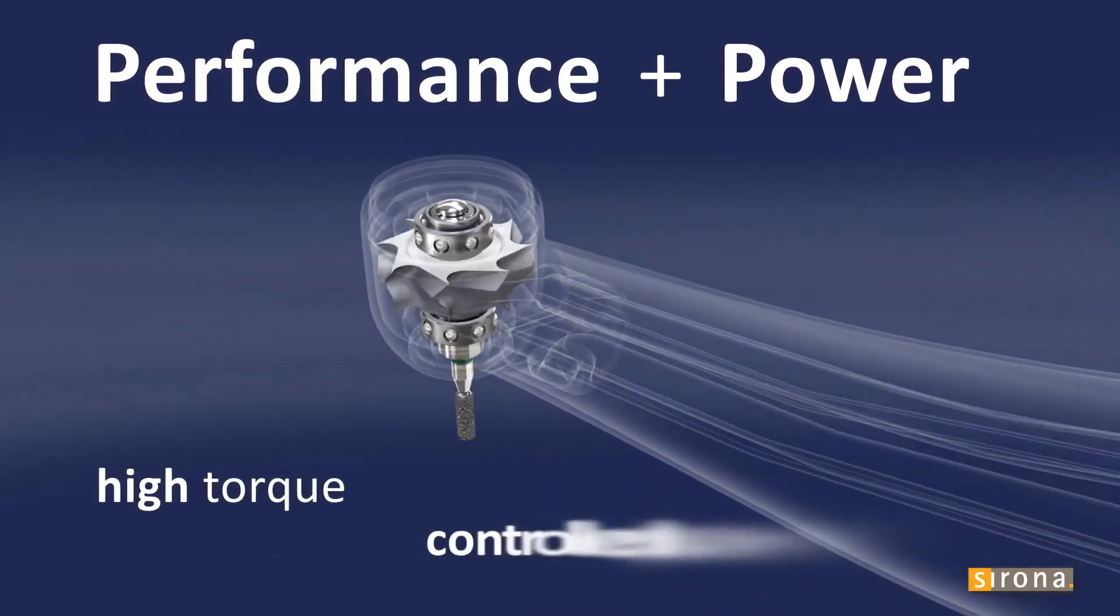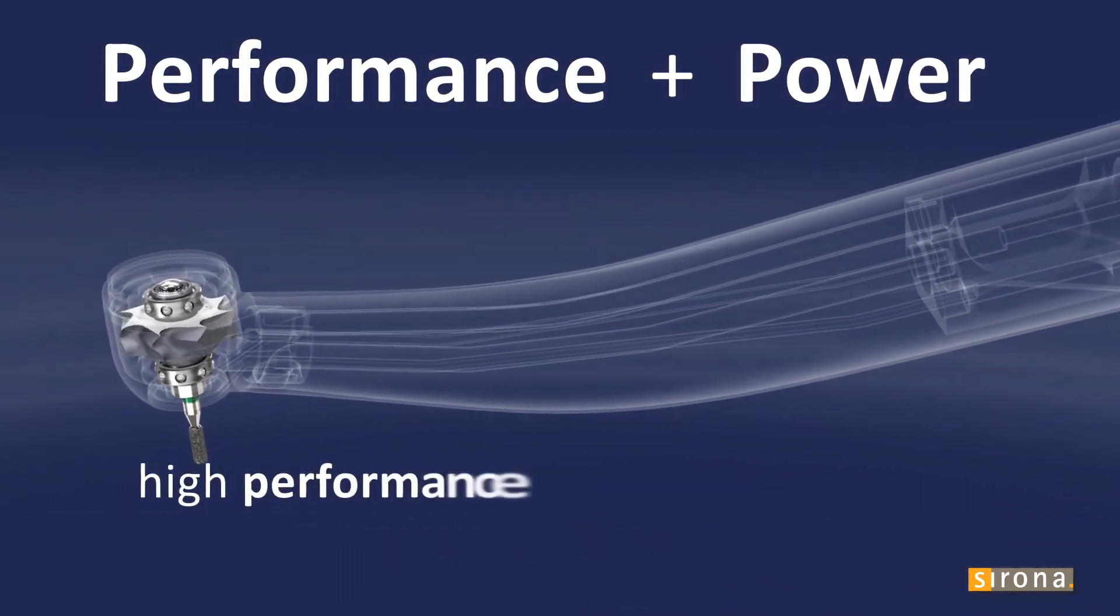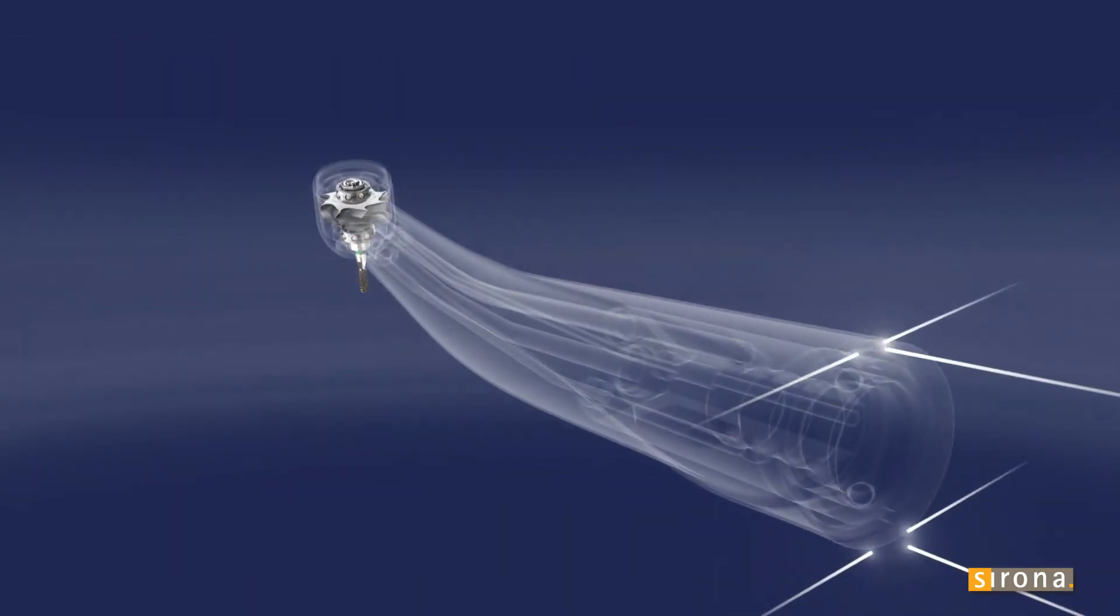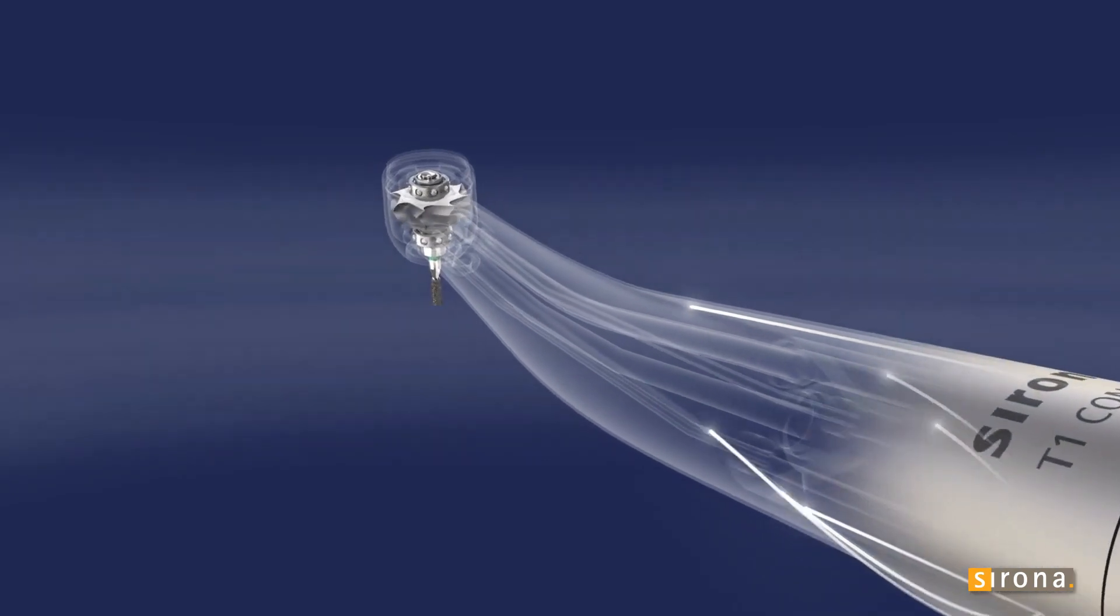There are handpieces with ratios of 5 to 1, 8 to 1, 10 to 1, and even 20 to 1, each with a speed that is ideal for dental procedures where more torque is required, such as endodontic and surgical procedures.